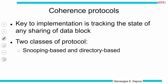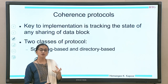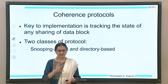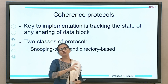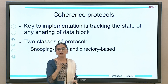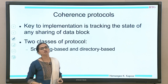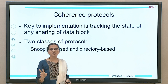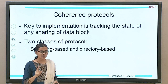The key implementation aspect of coherence is that we need to somehow know that others are sharing a cache block. There is a shared variable x in main memory, and because of caching this variable has gone to several processors. We need to keep track of who is reading or writing to this location. Based on this, we categorize coherence protocols into two types: snooping and directory-based.